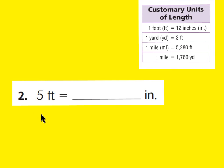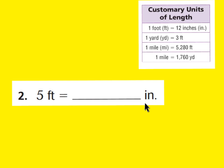Now this first question, number two, says five feet. We want to know how many inches are in five feet. Now there's a little rule that whenever you go from a larger measurement to a smaller measurement, you're going to multiply, because you're going to have more inches than feet. So when you want a bigger number, you're going to multiply. So five feet equals how many inches? Let's go up to our chart to remember how many inches are in one foot.